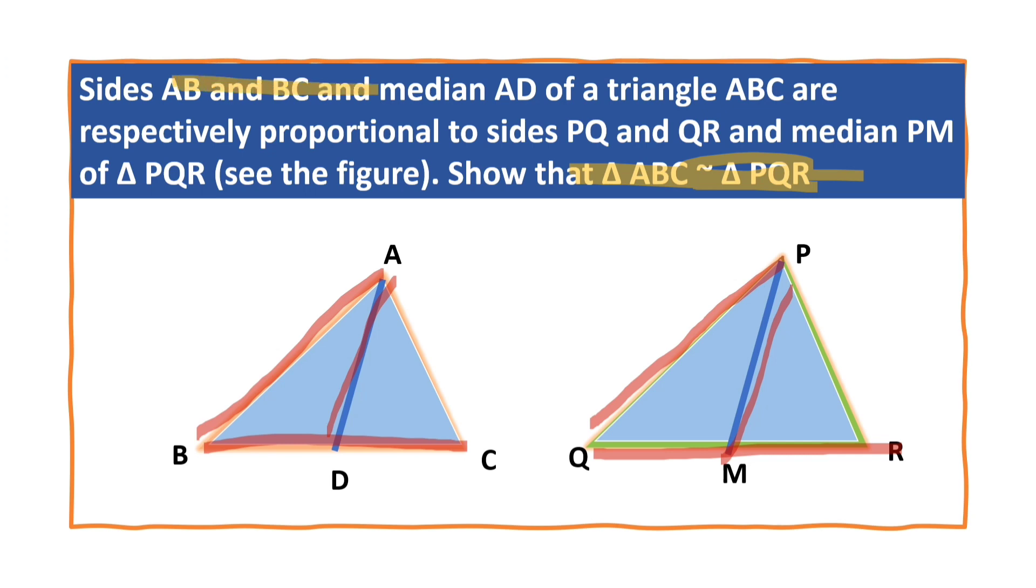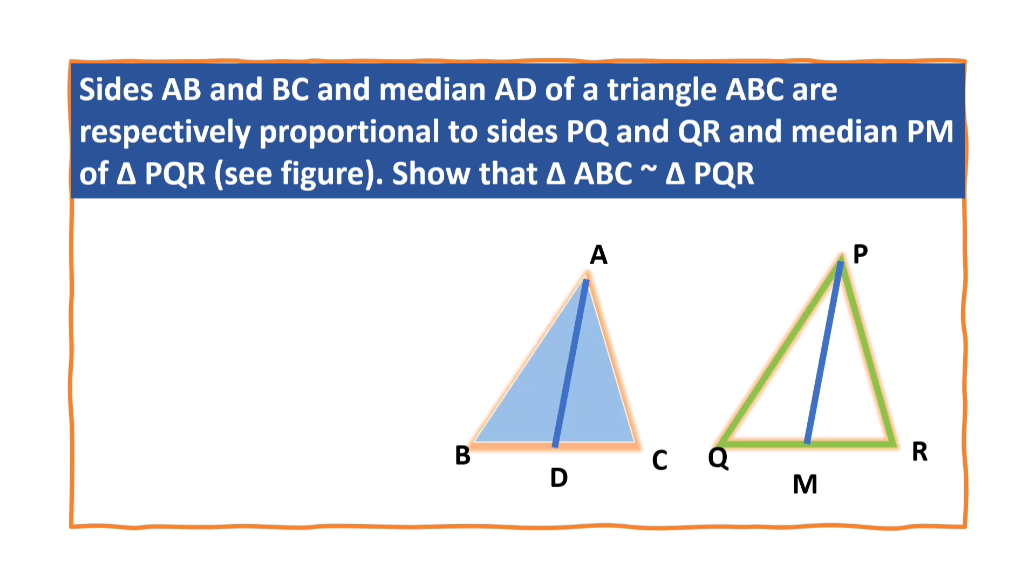Since AB, BC and median AD of triangle ABC is proportional to PQ, QR and median PM, we can write the relationship as AB by PQ is equal to BC by QR is equal to AD by PM. In triangle ABC and triangle PQR, we are given that AB by PQ is equal to BC by QR is equal to AD by PM.